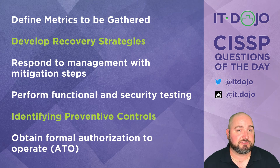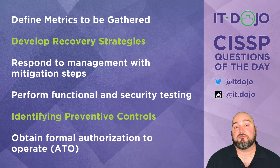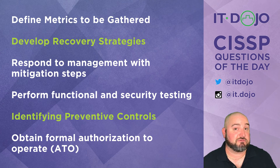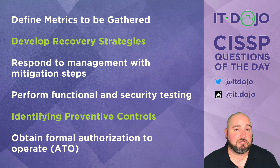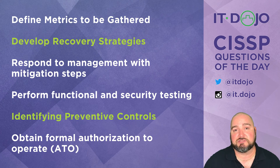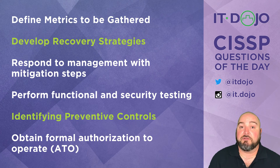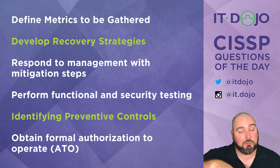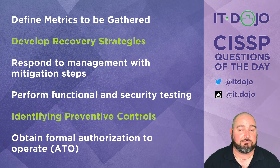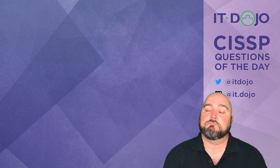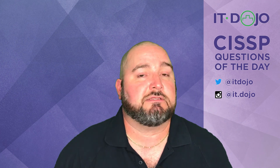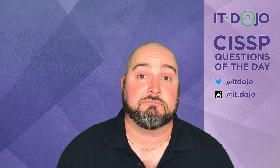Performing functional and security testing — that's part of the systems development lifecycle. Obtaining a formal authorization to operate, or an ATO — also part of systems development lifecycle. If you need them, there are links in the comments below for the seven steps of the IT contingency planning process, plus some really good reading on this topic. Two more questions done — appreciate it, that's all I got, see you tomorrow.